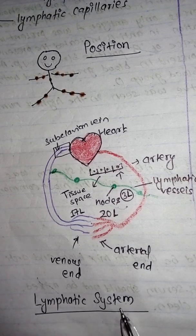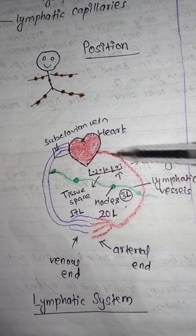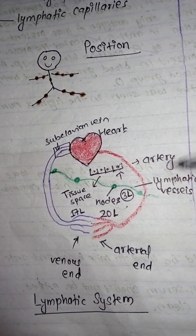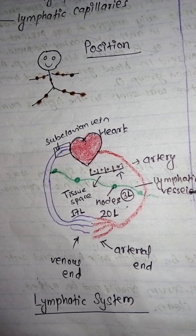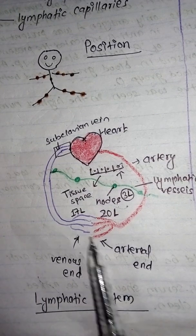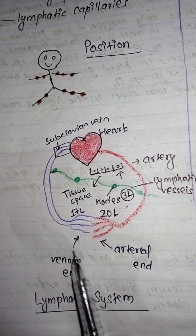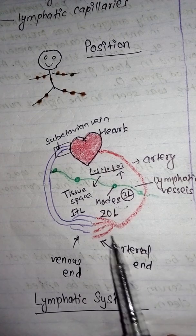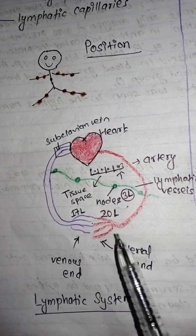This is the overview of the lymphatic system. Blood is pumped away from the heart by the arteries to different parts of the body. The arteries divide into smaller branches called arterioles, and arterioles divide further into capillaries. Capillaries have two ends: an arterial end and a venous end. From these capillaries, fluid is leaked — 20 liters of fluid is leaked into the tissue space.